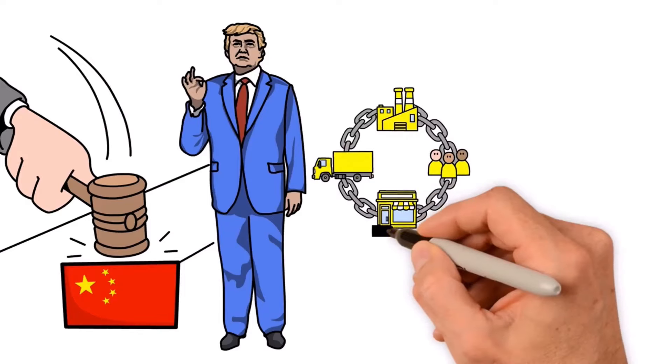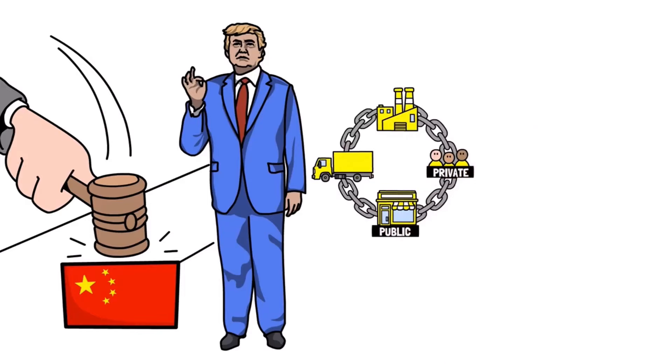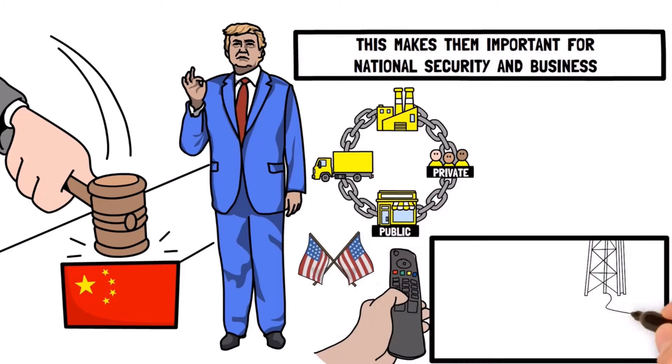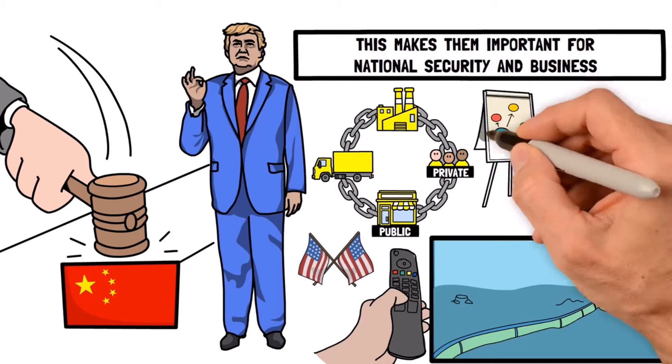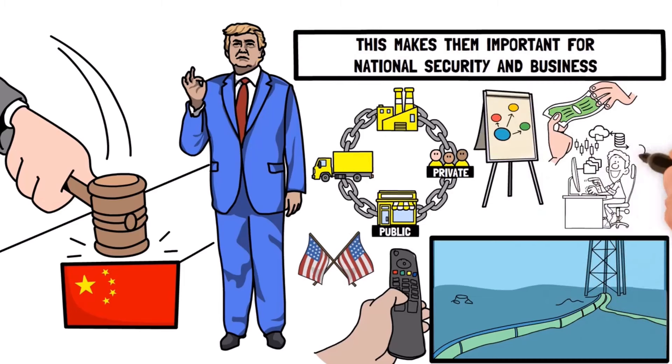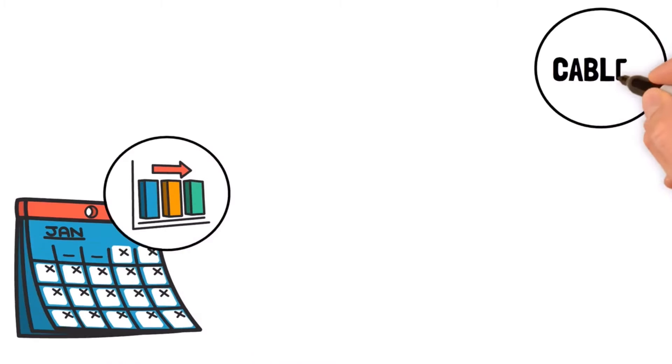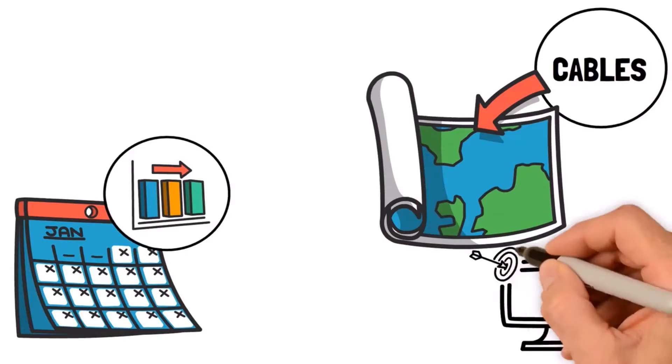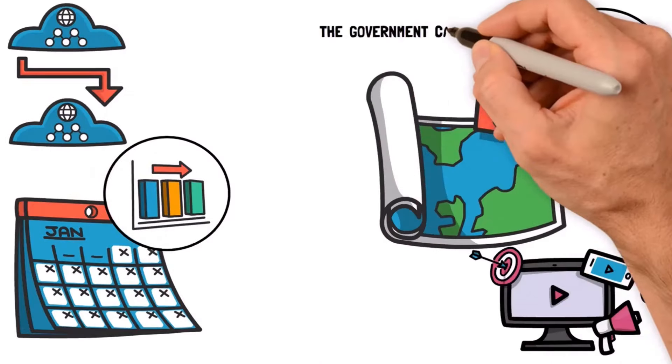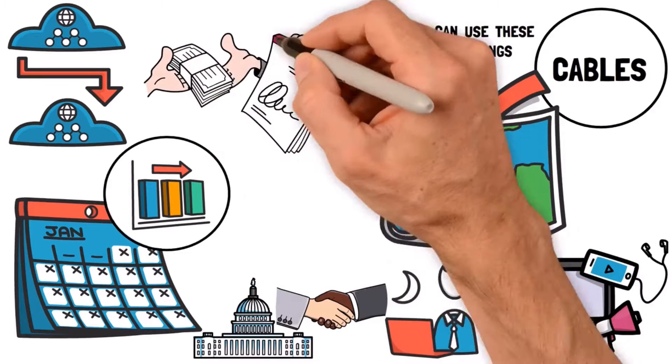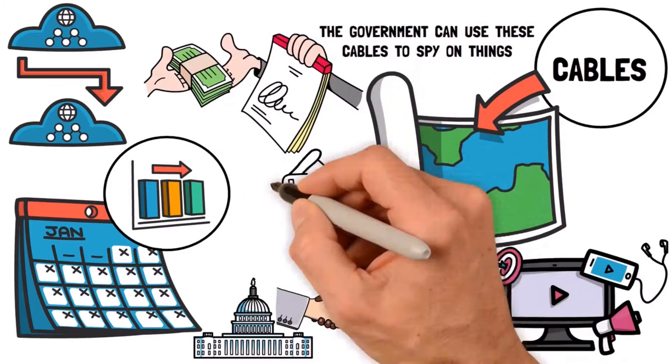Submarine cables are a bit special because they mix together public and private stuff. This makes them important for national security and business. The US wanted to control these cables and make sure American companies were the leaders. Once these cables are in the water, the companies that run them can make money by letting other tech companies and internet providers use them. This can last for a long time, like several decades. The government paid the big bills to make sure American companies got the contracts, not companies from other countries.